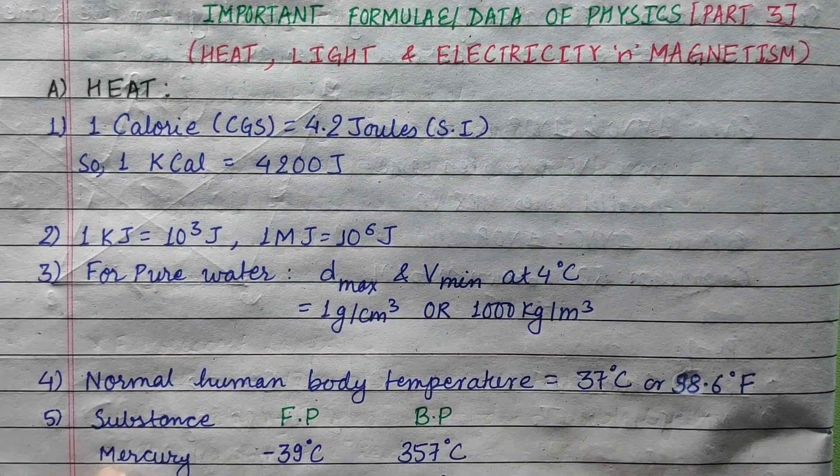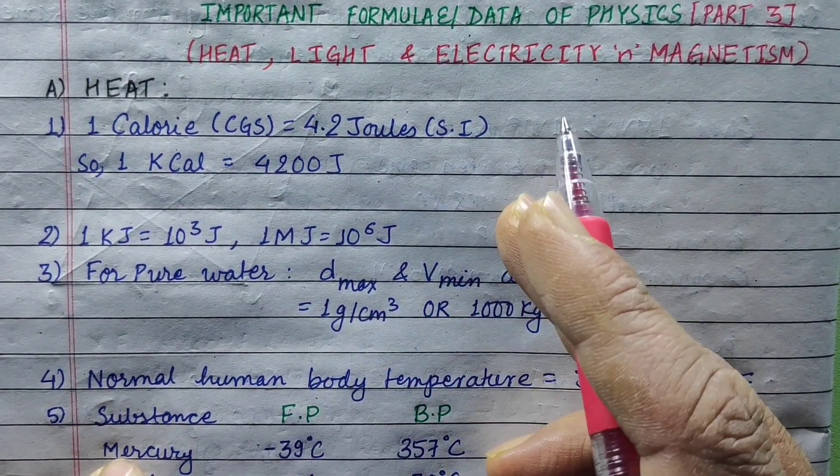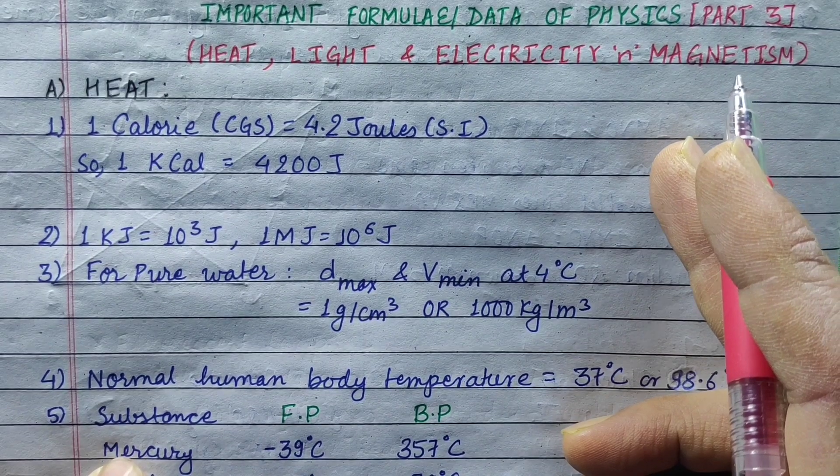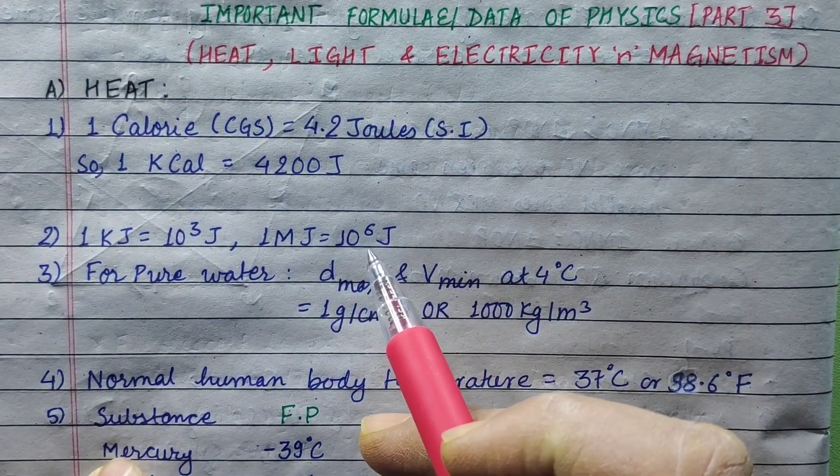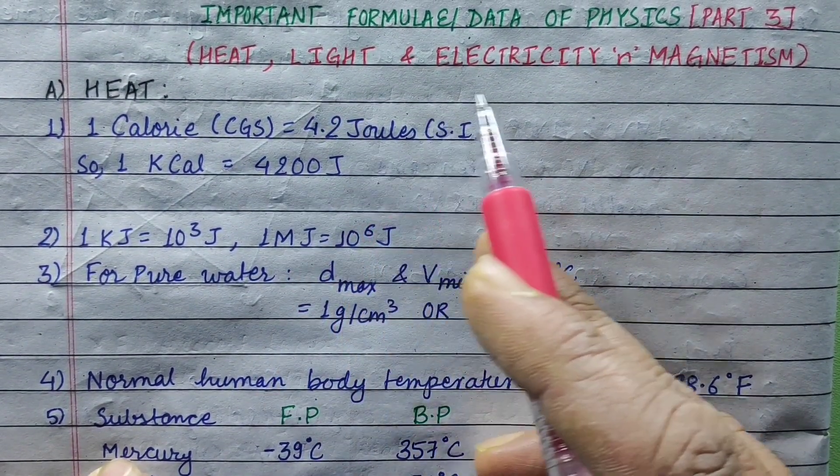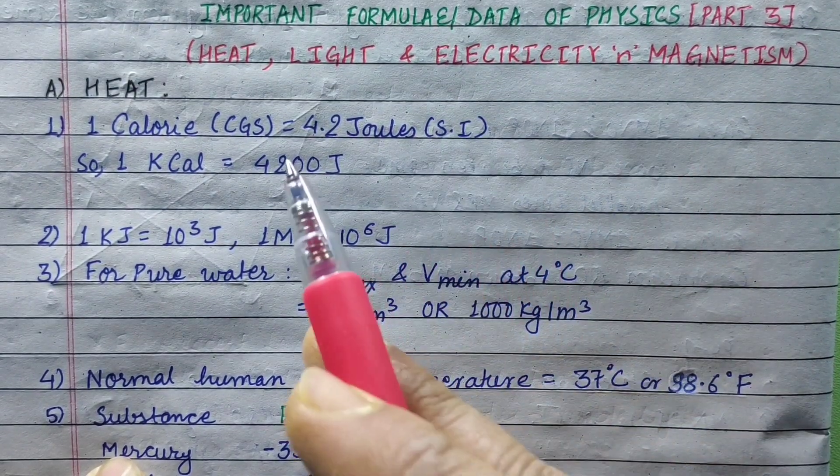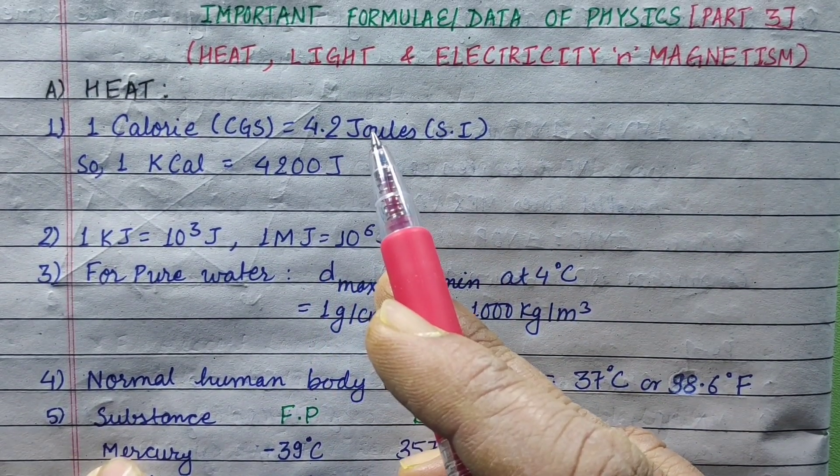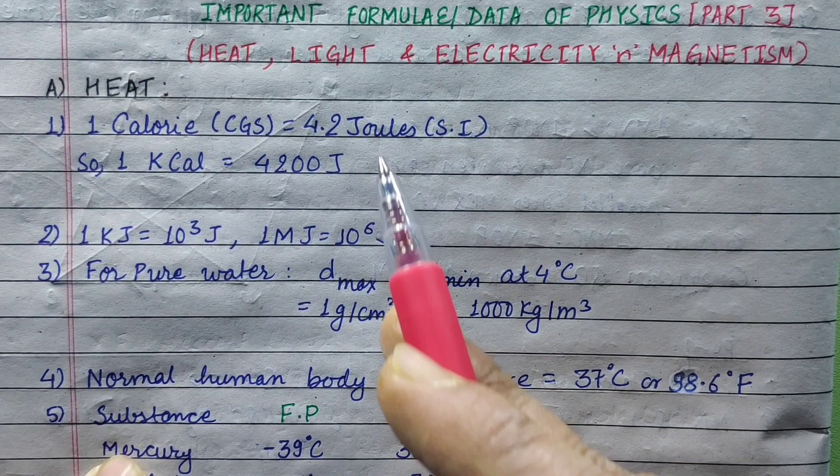Hi everyone. Today we are going to learn the important formulas of the physics part 3 in class 10: heat, light, electricity and magnetism. We are going to learn the formulas in this video.